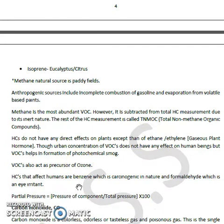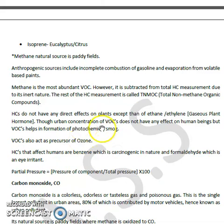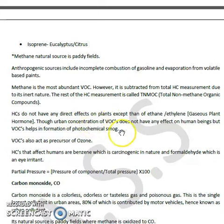If we take the example of volatile organic compounds such as benzene (C6H6), which is a carcinogen, and formaldehyde, which is also harmful — these hydrocarbons are basically affecting human health.